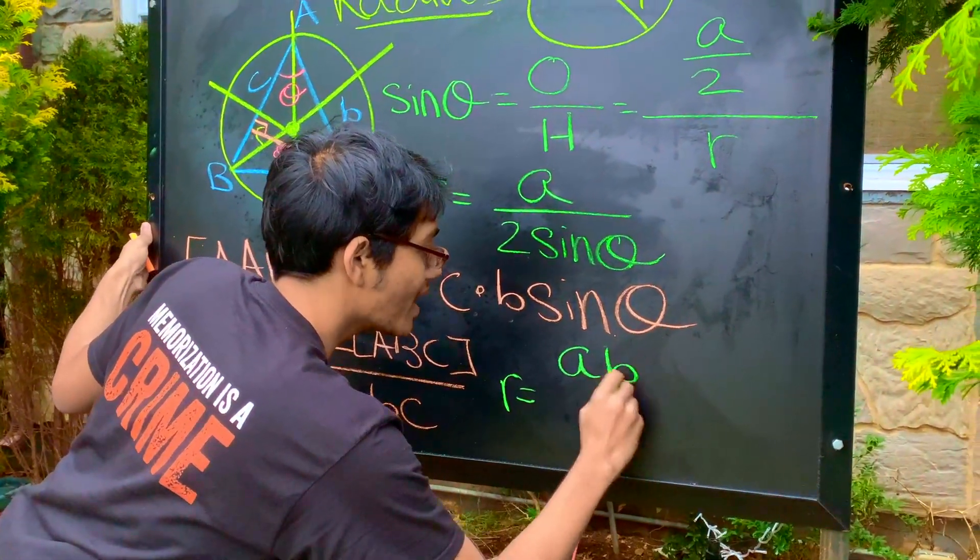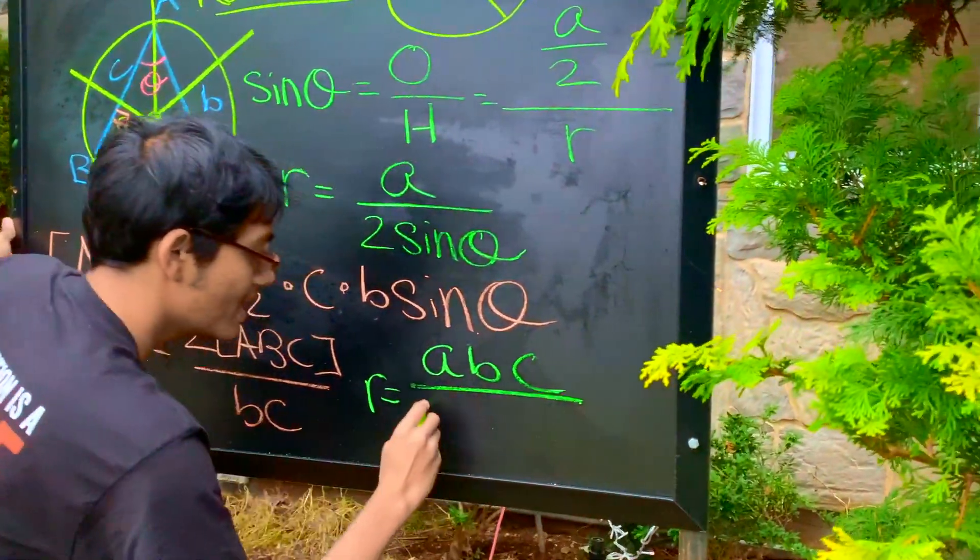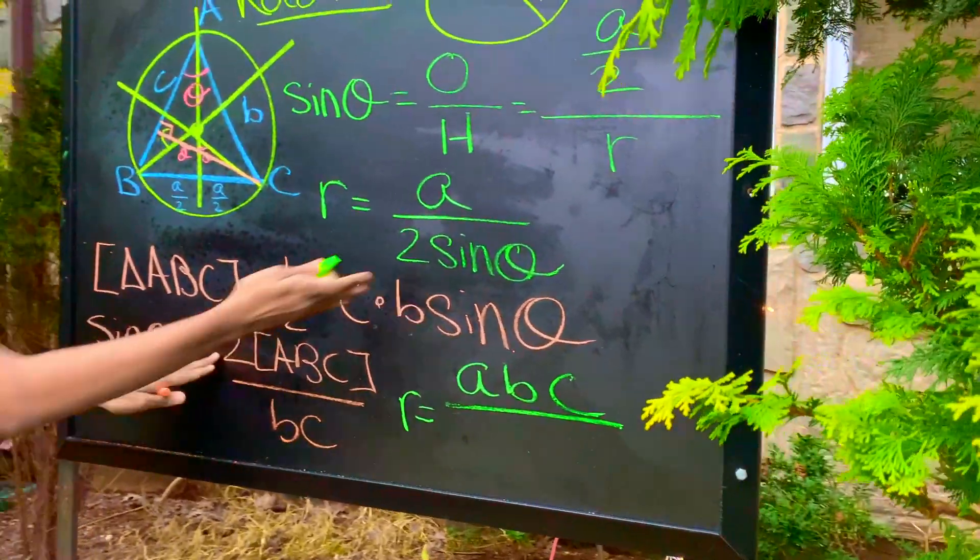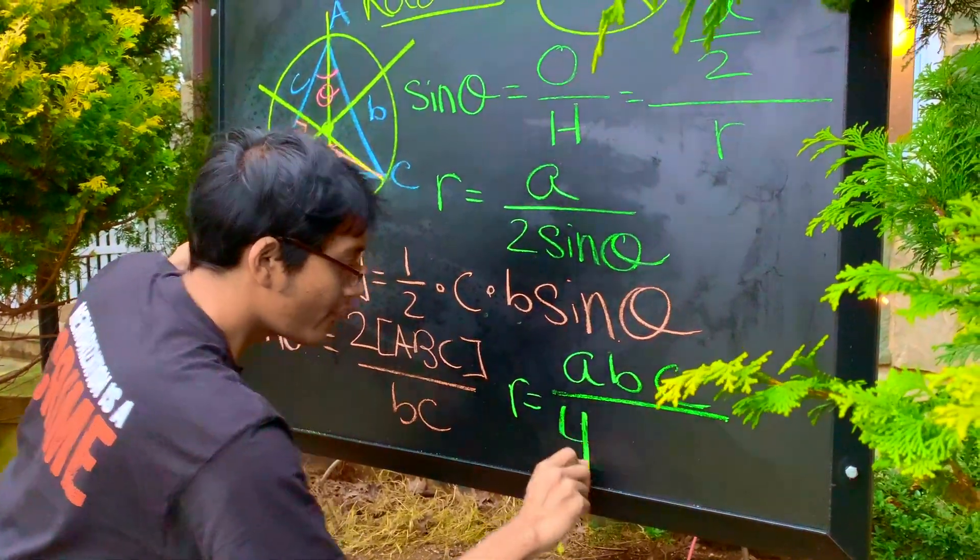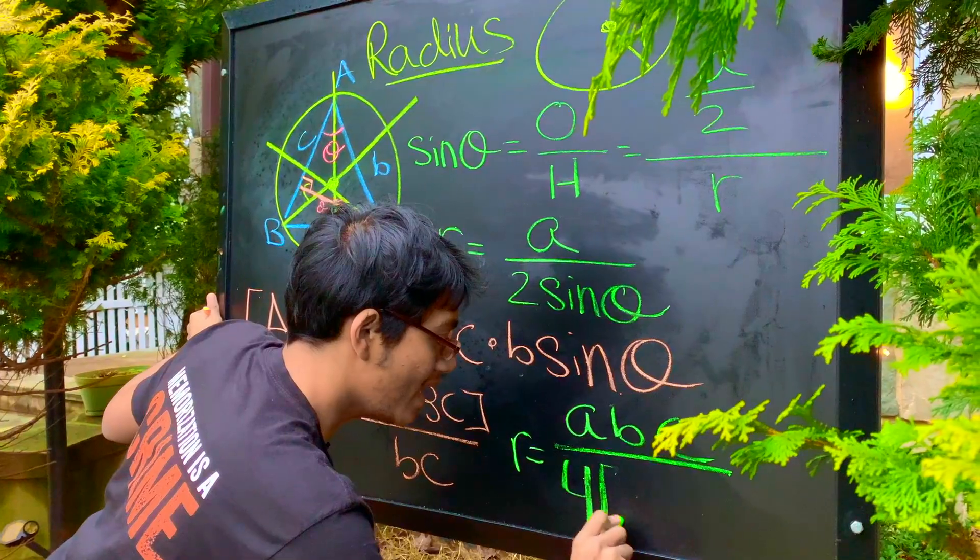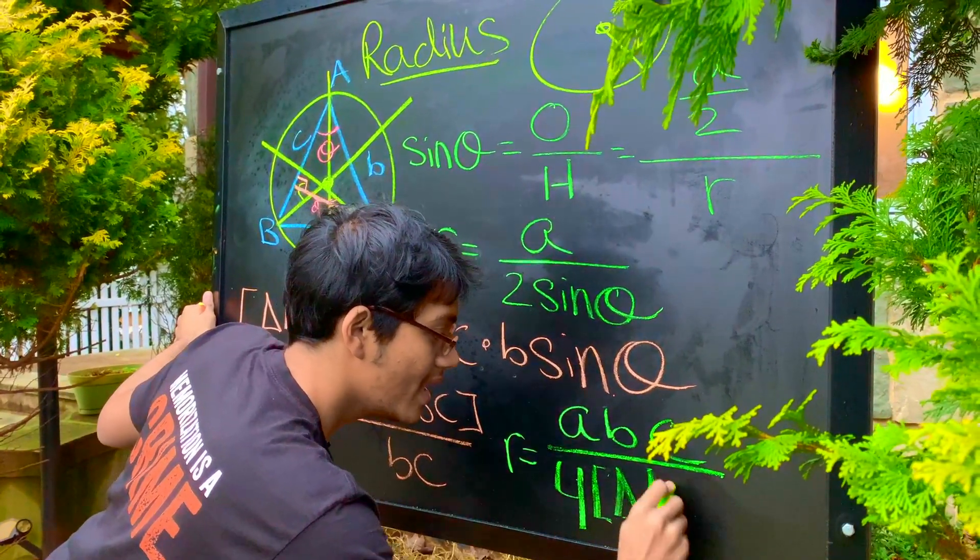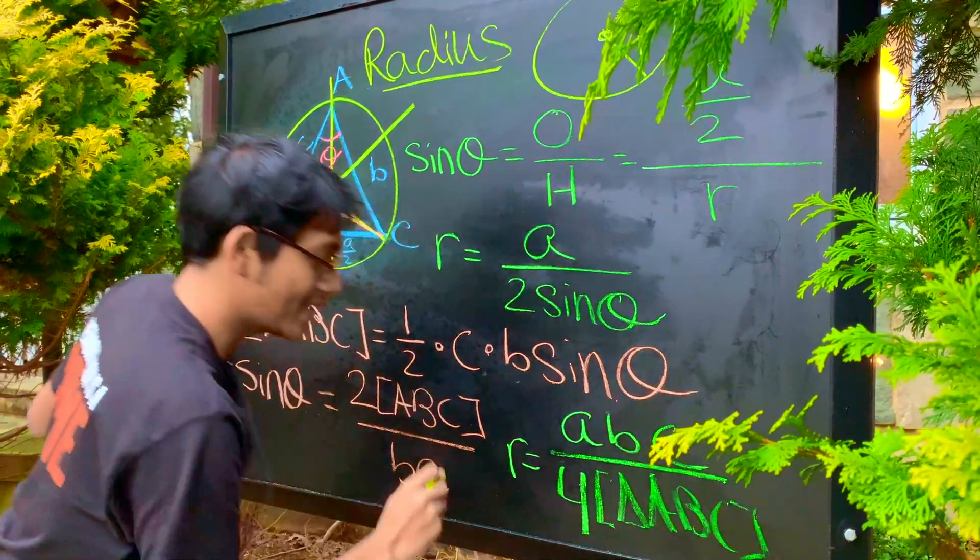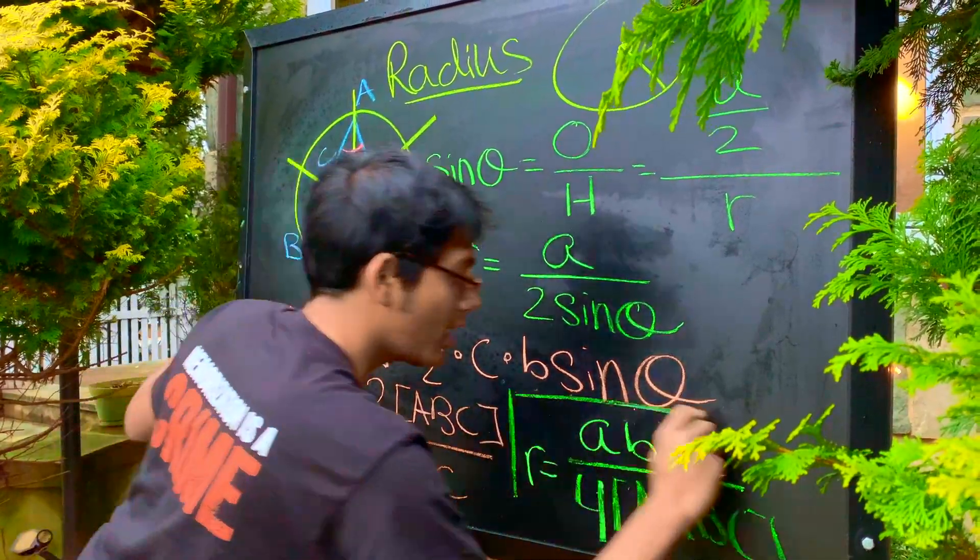We're going to get the product of all three lengths of the triangle divided by what? Well, 2 times 2, that's going to give us 4. 4 times the area of the triangle. 4 times the area of our triangle ABC. And that, ladies and gentlemen, is the formula we've been looking for.